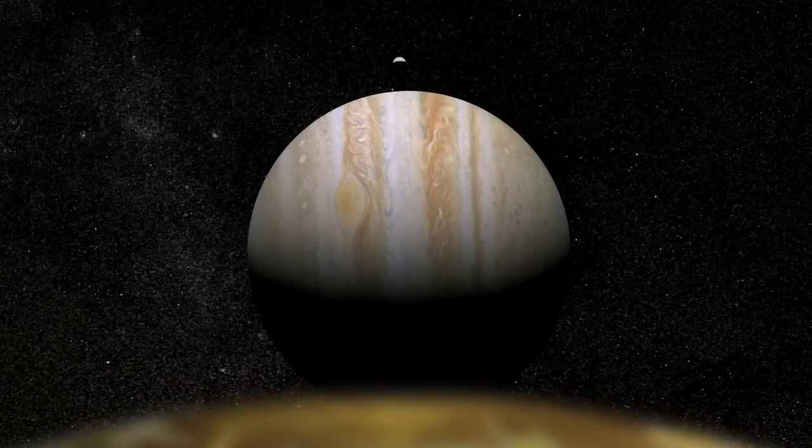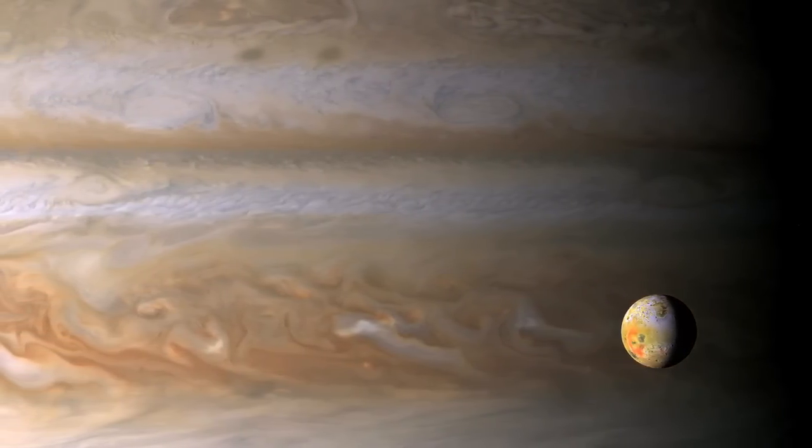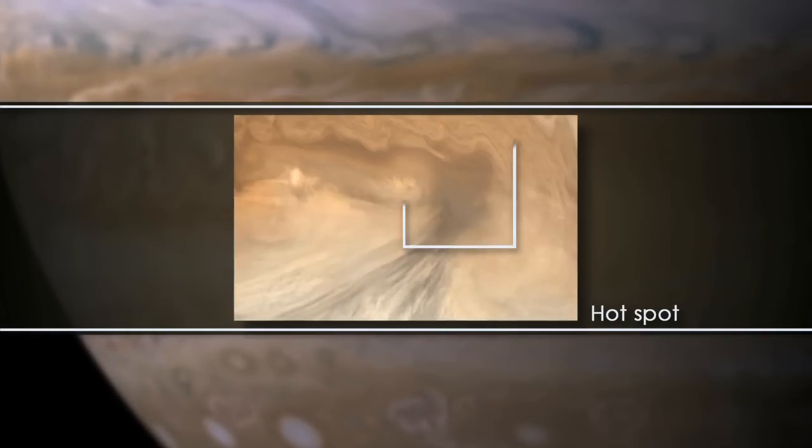When we look at Jupiter, we're seeing the top of its atmosphere and its weather layer. And its weather layer contains a lot of interesting features such as jet streams, vortices, storms, and these particular features called hotspots.